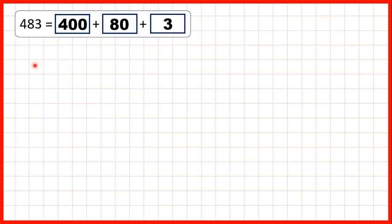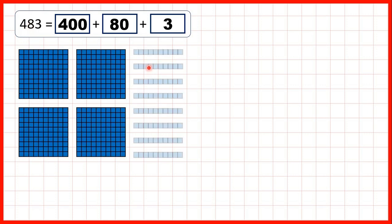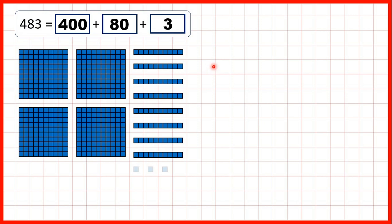So let's take a closer look at these numbers. First, we had 483. We can show that as 4 hundreds, 8 tens, and 3 ones. What we've shown here is the number 483, but we could also think of it as 400 plus 80 plus 3. So that's what we're doing when we partition numbers — we're showing the value of each digit.